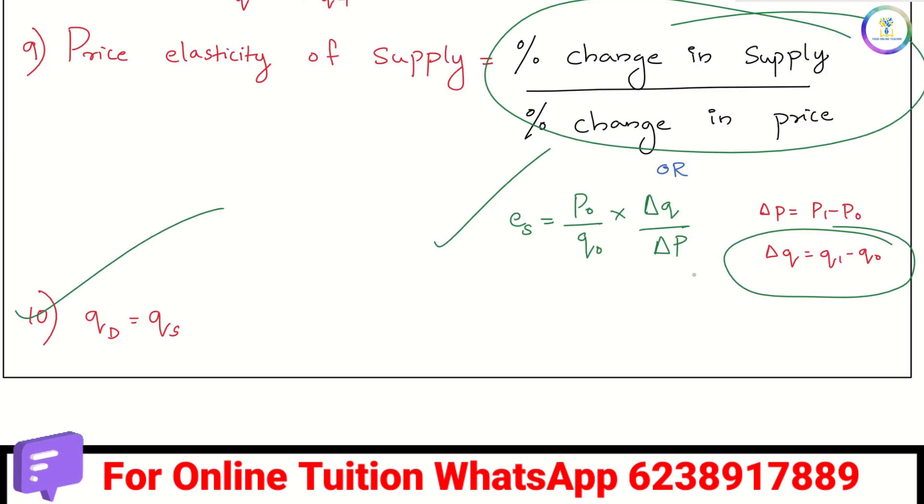Equilibrium quantity and equilibrium price equals QD equals QS, that is demand and supply equations equate. That is how we are doing this video.